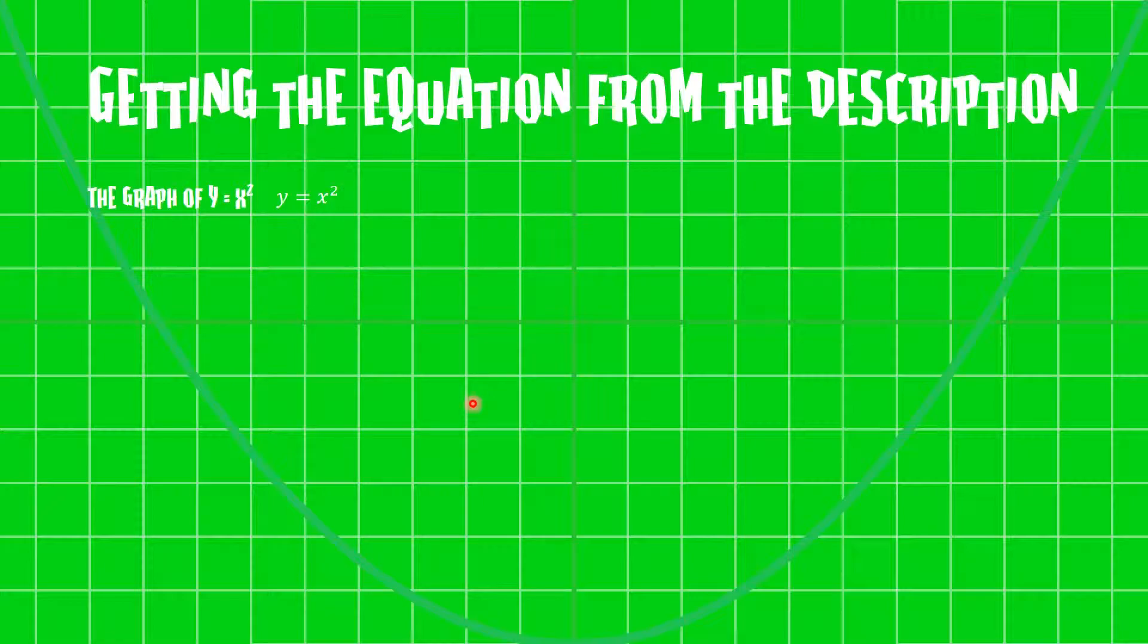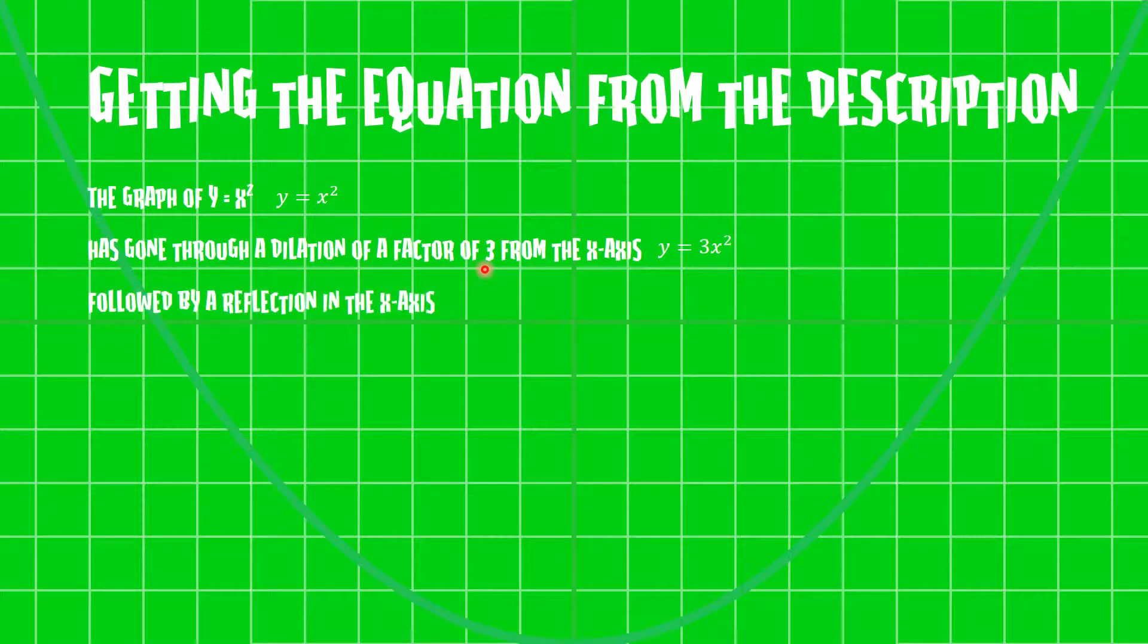So let's put down what we know: y = x². All right, that's all we know so far. Moving on to the next line, the graph of y = x² has gone through a dilation of a factor 3 from the x-axis. Dilation of factor 3, so we're going to have y = 3x².